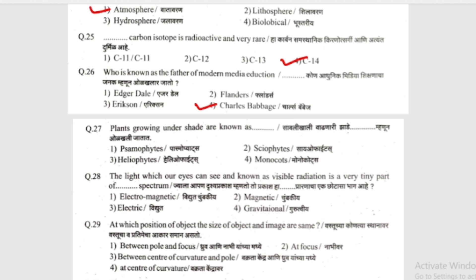The next question: plants growing under trees are known as what? The options include sciophytes, heliophytes, and monocots. The light which our eyes can see, known as visible radiation, is a very thin part of the electromagnetic spectrum.